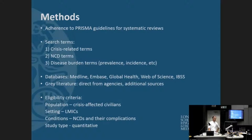The systematic review followed the PRISMA guidelines. We employed three arms in terms of search terms, looking at crisis-related terms, terms related to non-communicable diseases, and terms related to the burden of disease. We searched the usual databases plus gray literature sources. Some co-authors who work for humanitarian agencies were supplying gray literature sources themselves, and we approached other agencies and databases. This is an ongoing process, and I'll come back to that at the end as we solicit more papers from you.